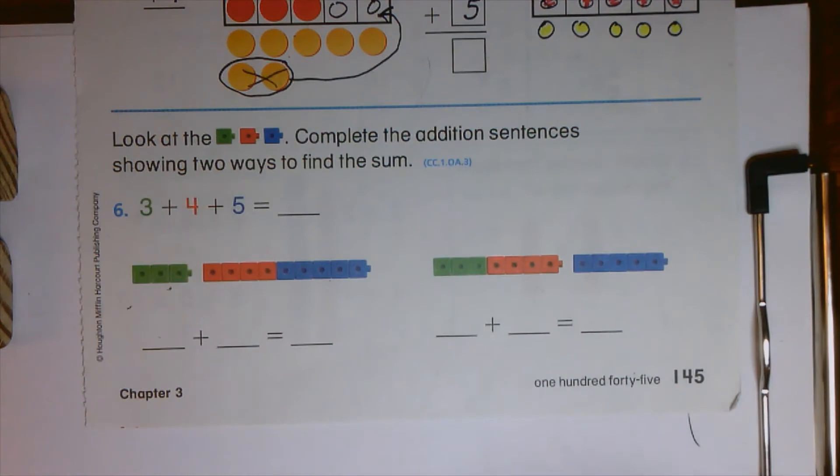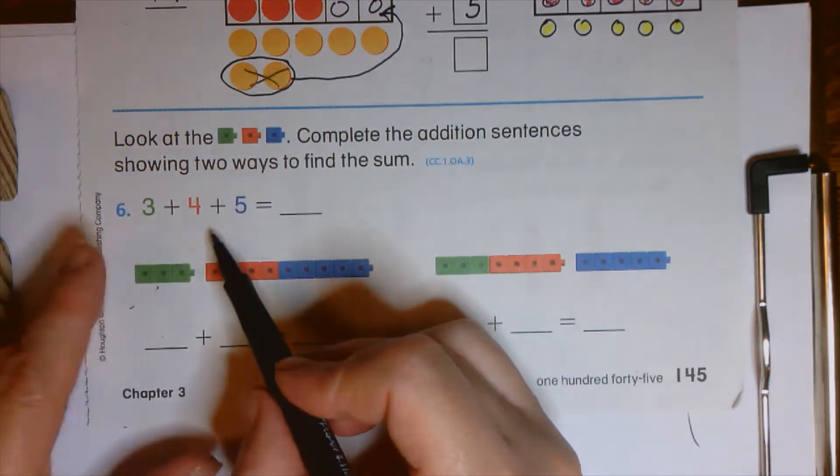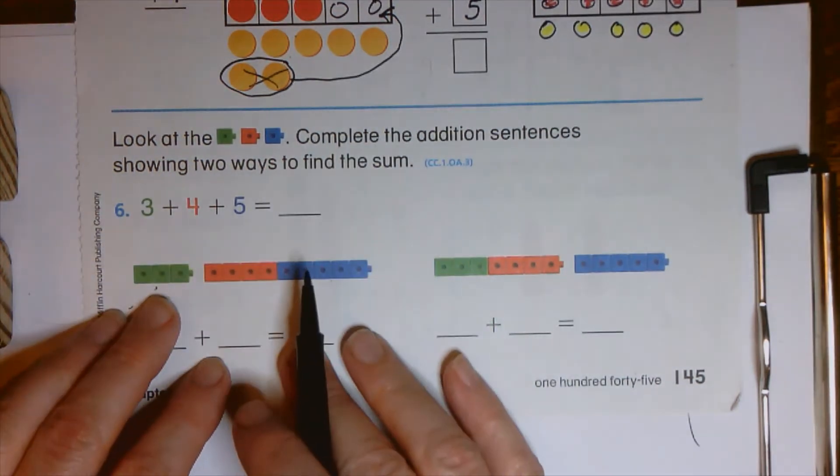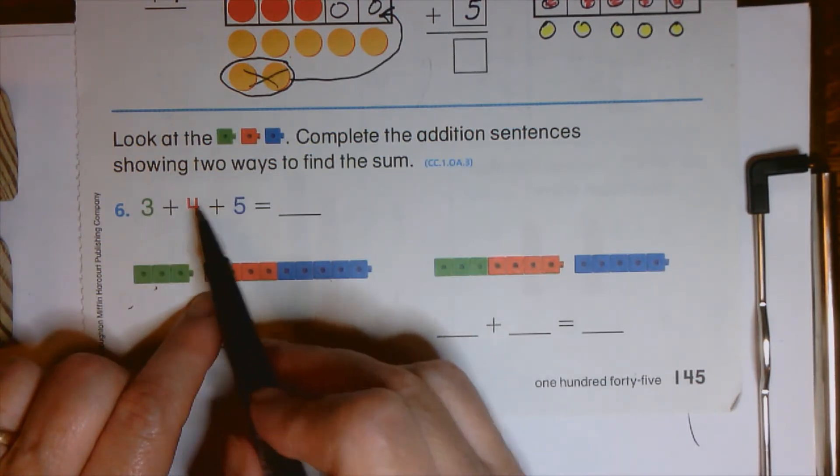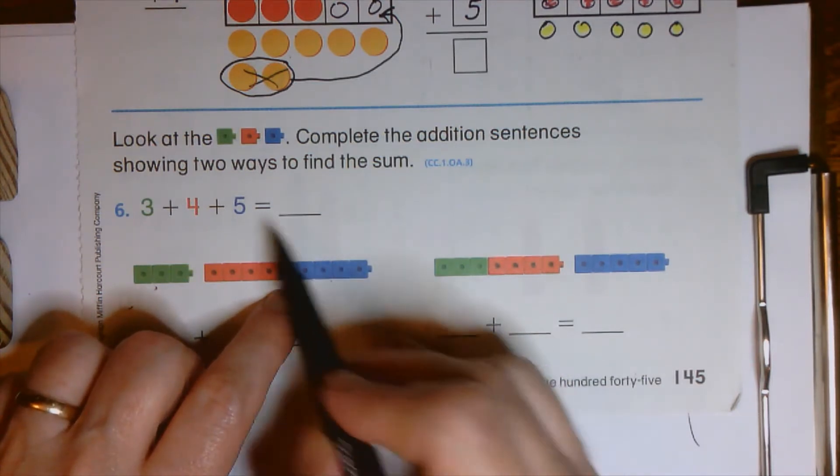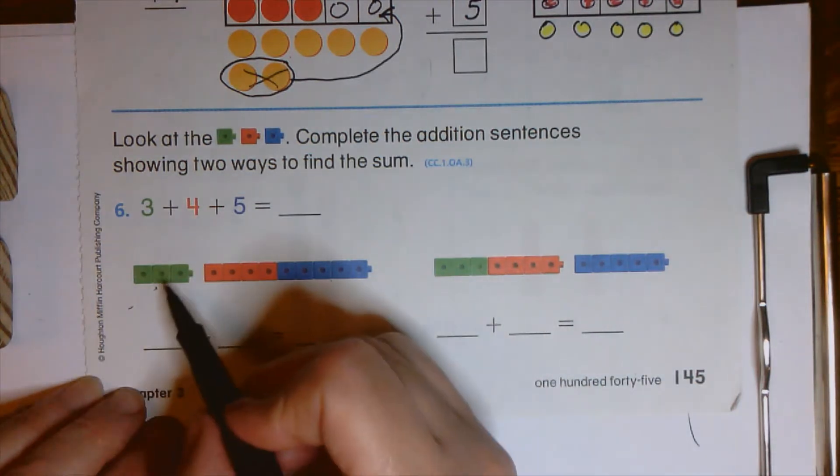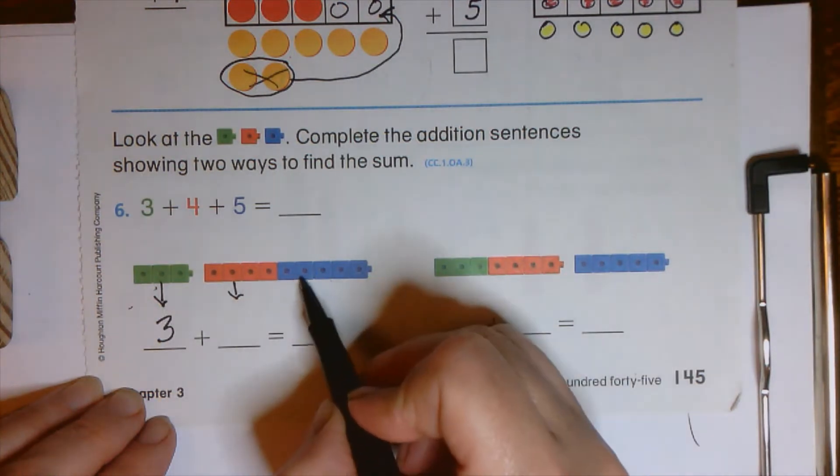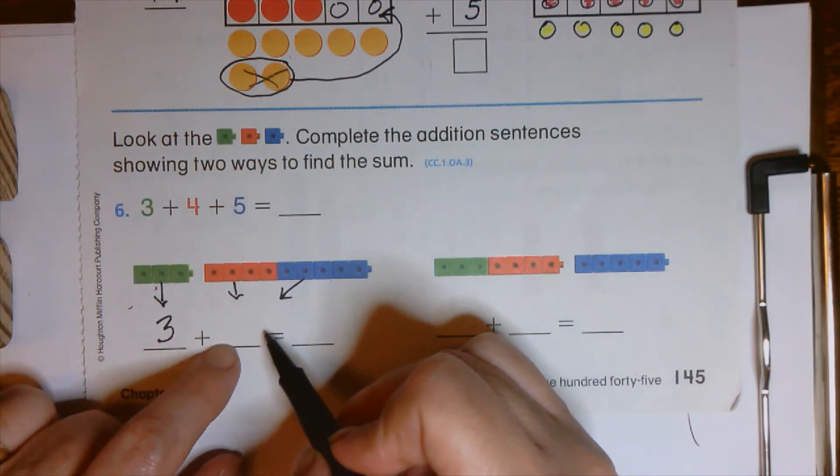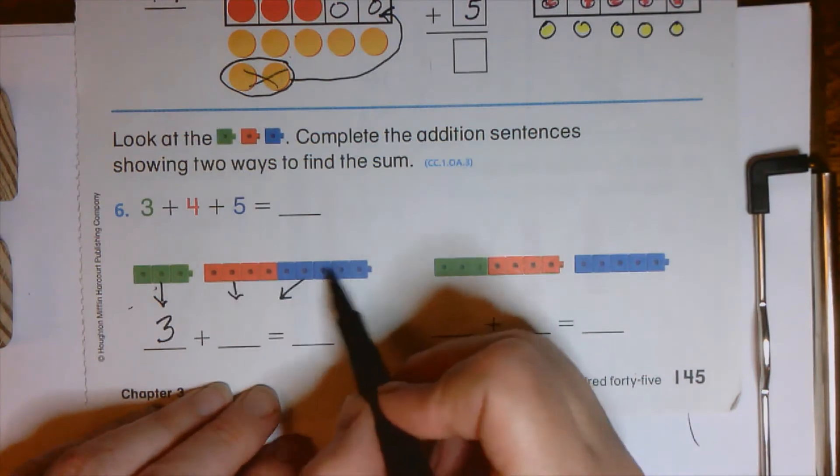Look at the cubes, complete the addition sentences, showing two ways to find the sum. Do you remember if we're adding three numbers together, we're going to choose two to add together first and then the other one. So let's look here. Here's the three. Do you see how these three cubes are green, just like that number? And four red cubes, just like the red four. And five blue cubes, just like the blue five. So which two are actually stuck together here? The four and the five. So this three just comes right here, right? The four and the five are going to go together right there. What's four and five together? Figure that out quickly, write that down.